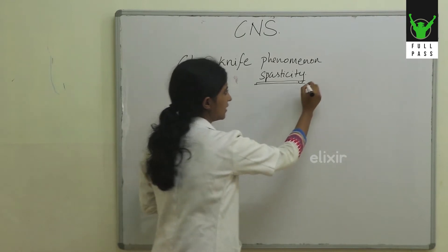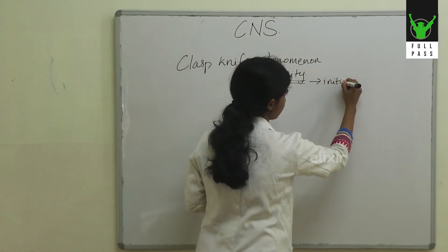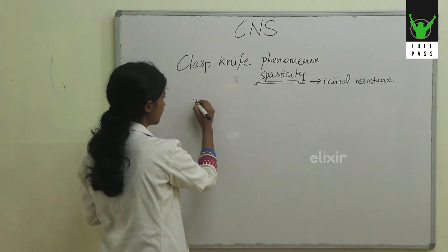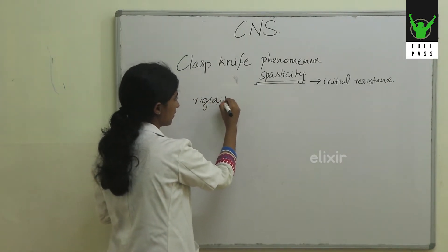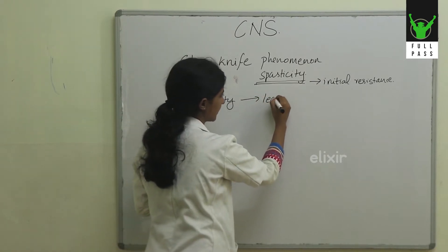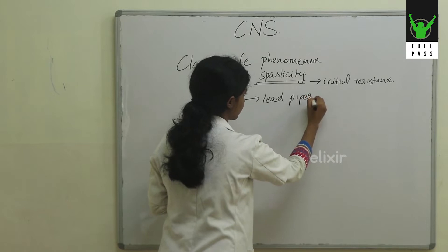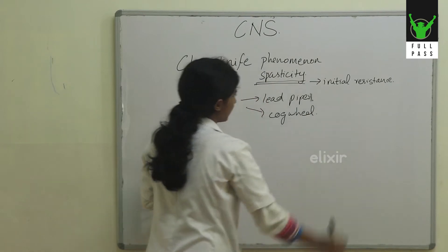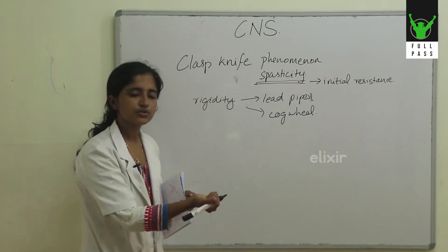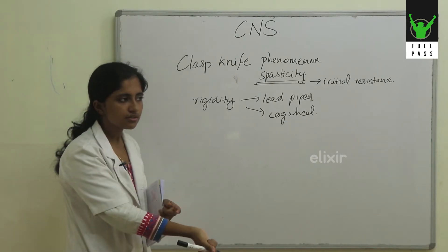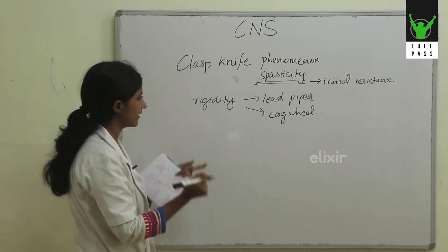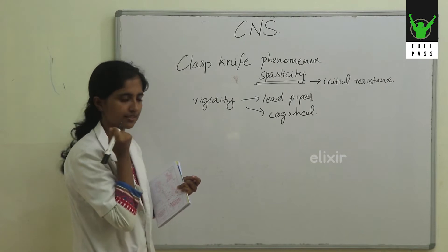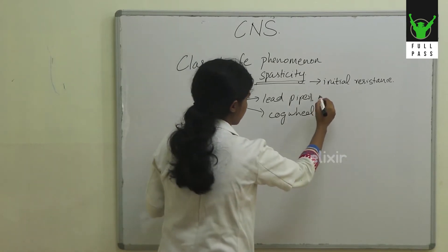There is initial resistance to passive movements. In rigidity we have two types: lead pipe rigidity and cogwheel rigidity. In lead pipe rigidity, resistance is present throughout the entire motion. In cogwheel rigidity, you don't have resistance throughout — you have catches in between. That is cogwheel type of rigidity.